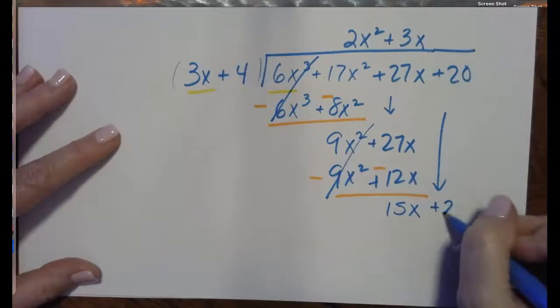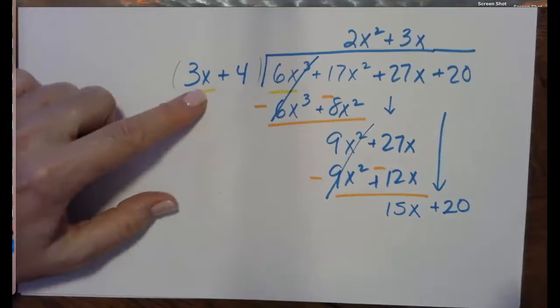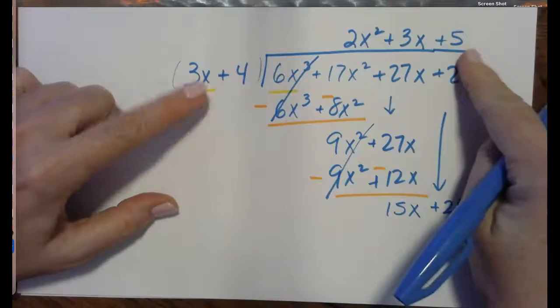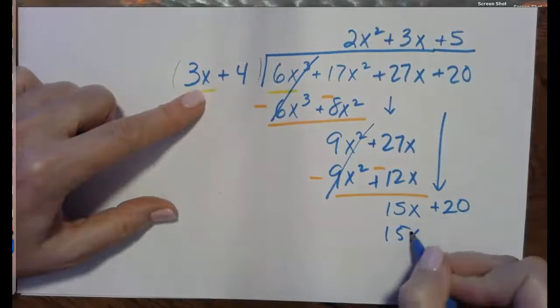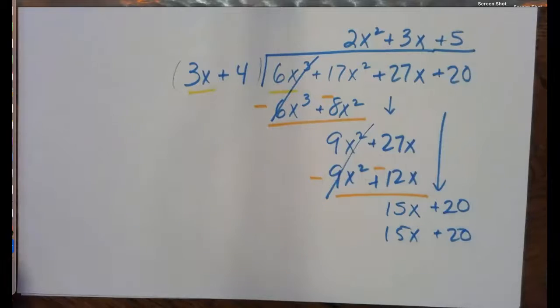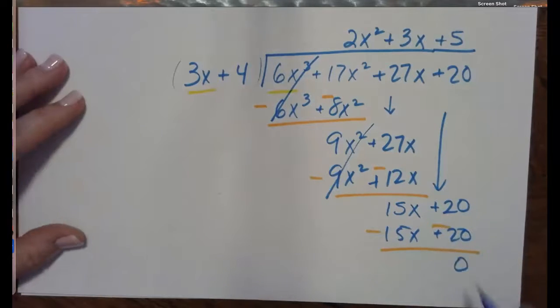Bring down the plus 20. 3x goes into 15x plus 5 times. 5 times 3x is 15x, and 5 times 4 is 20. And draw the line, change the sign. In this case, we have a zero remainder.